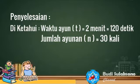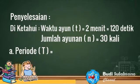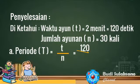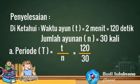Untuk menghitung periode, kita gunakan rumus T besar sama dengan T kecil per N. T sama dengan 120 per 30, sehingga diperoleh nilai periode sama dengan 4 detik.